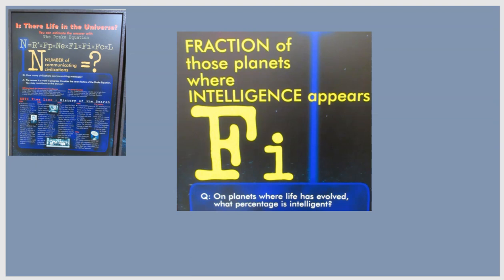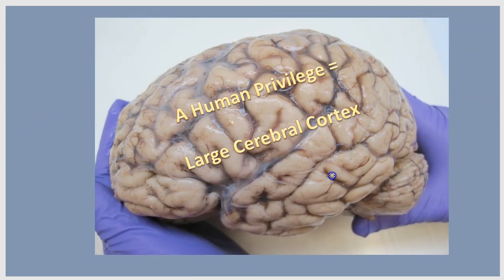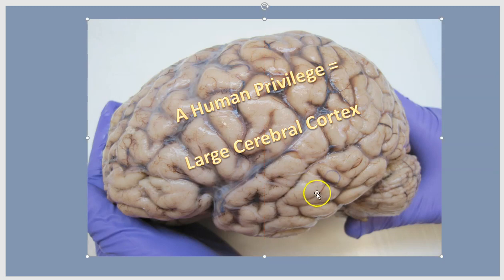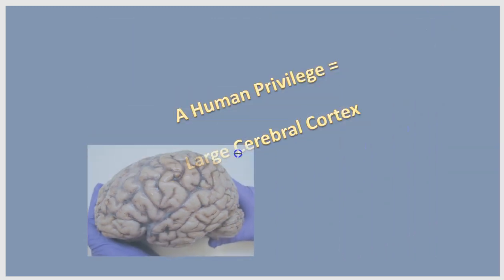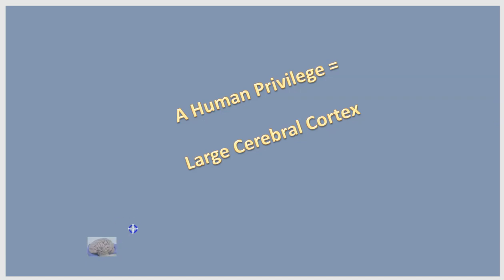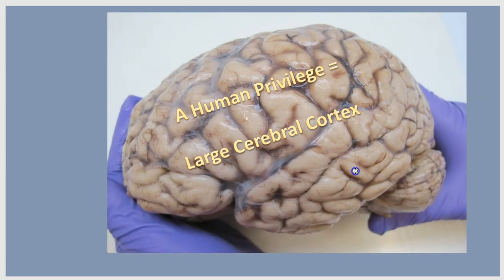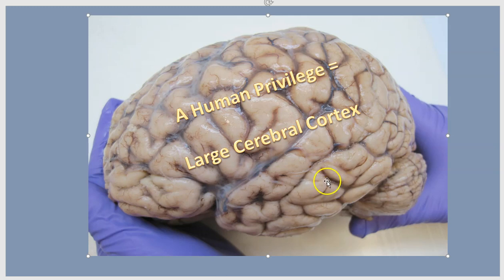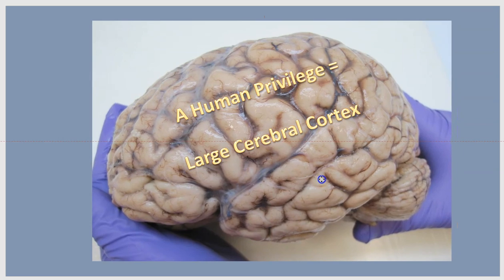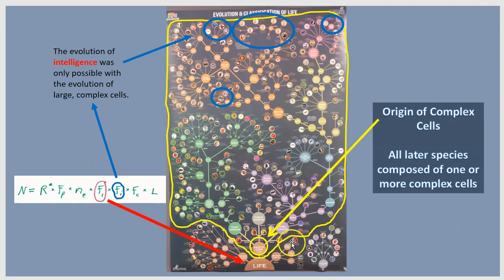The next term in the Drake equation is the fraction of worlds where life does emerge—does the life get intelligent? For us, we enjoy a super huge brain, and so we can ponder some of these deep questions. But not all living things have big brains. Lots and lots of animals have tiny brains, and plants don't have brains at all. So if there is life on a planet, it is not just a foregone conclusion that life will evolve to be intelligent like we are. On our tree of life, we see the origin of life at the bottom, and there's a critical transition where cells got more complicated. That was really important because all of the intelligent life forms that we're aware of are composed of these complex cells.